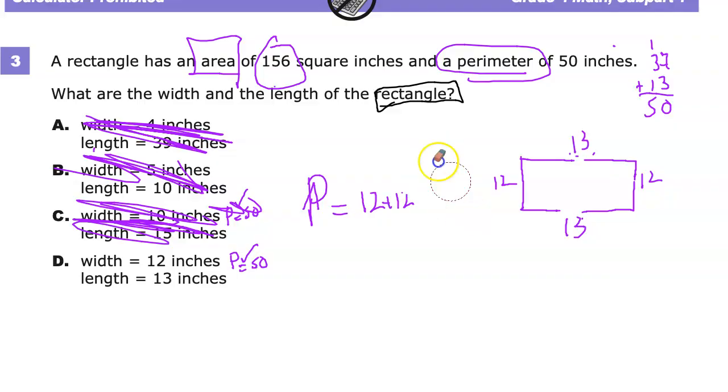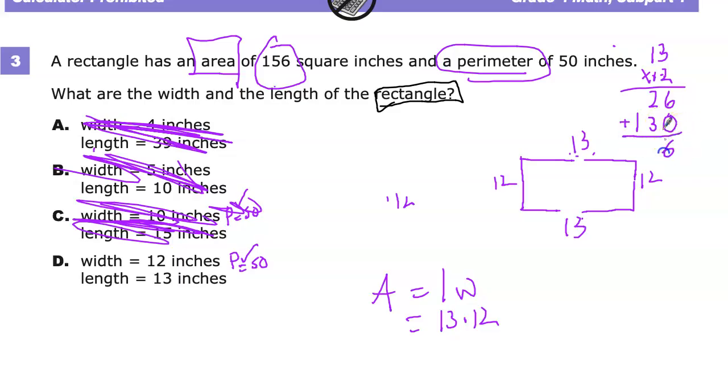Only time for area left. Remember that whole length times width thing? Here we are again. Staring it right in the face. 13 times 12. Now there's no way that if it's me, I'm going to be able to do it without sort of bringing it on over here. 3 times 2 is 6. 2 times 1 is 2. Last time I checked. This is a 10 and not a 1. So you have to put a 0 there so you're multiplying by the correct amount. 1 times 3 is 3. 1 times 1 is 1. 3 and 2 is 5 the last time I checked. And hey, hey, our area of 156. So checks all around. Our final answer is D.